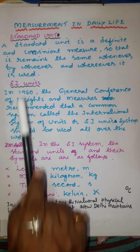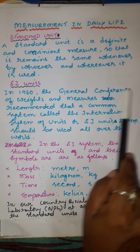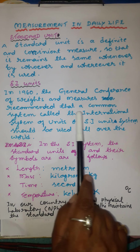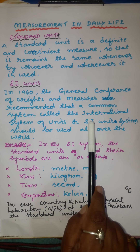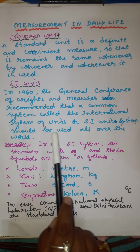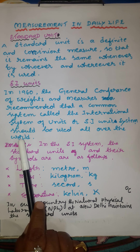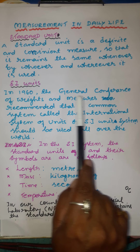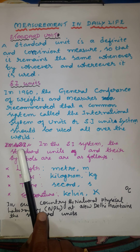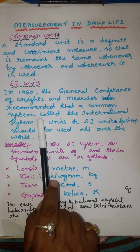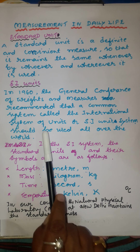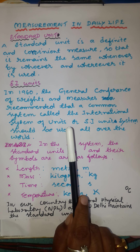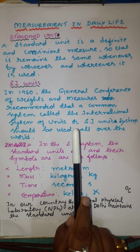Now, here we have SI units. In 1960, the General Conference of Weights and Measures recommended that a common system called the International System of Units, or SI units system, should be used all over the world. They recommended that this common system called SI unit should be used all over the world — it is a common system used all over the world.